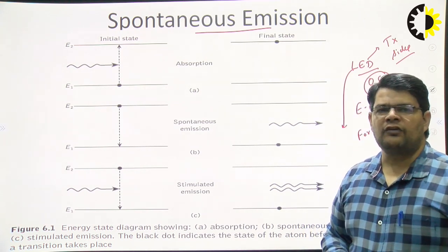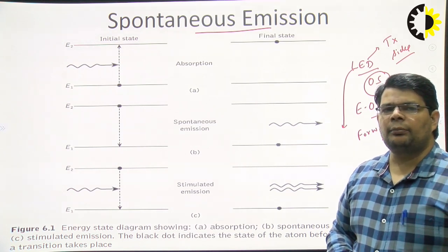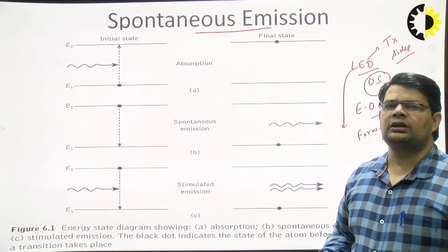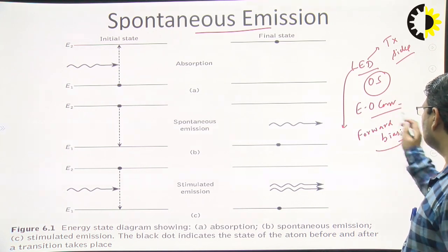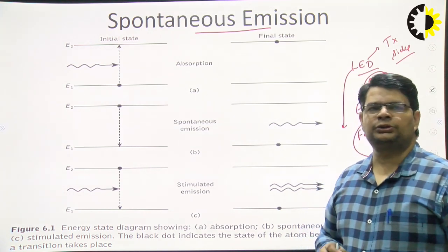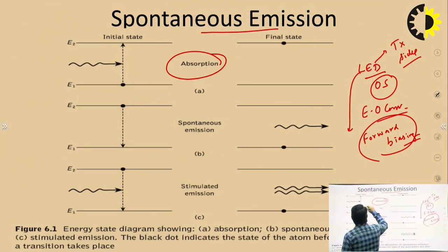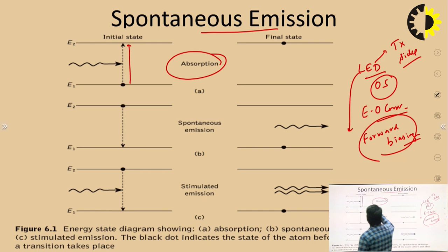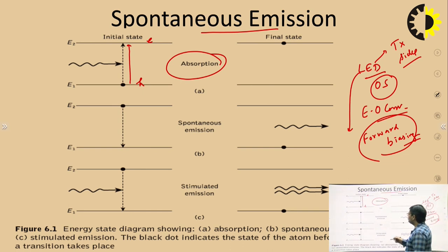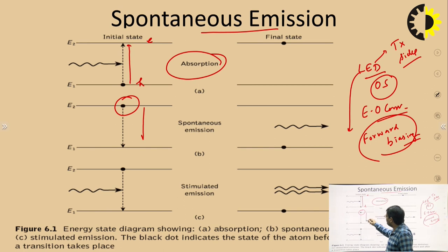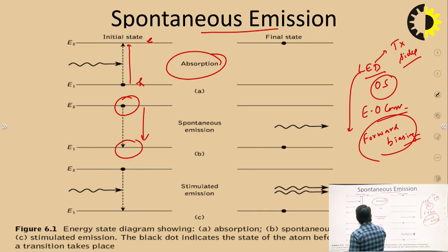When the optical sources are forward biased, minority carriers are injected — electrons are injected. After forward biasing, energy is absorbed and absorption occurs. Whenever there is forward bias, there will be a phenomenon of absorption and the electron will jump from the lower state to the higher state. In this case, we have an electron in the higher state and a hole.